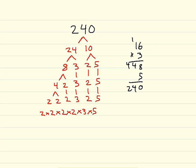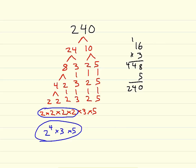Our last thing we need to do is write our answer using exponents. We have four 2's here, so we have the base of 2 with the exponent of 4. Then we multiply that by 3 and times 5. So your prime factorization using exponents of 240 is 2 to the fourth power times 3 times 5.